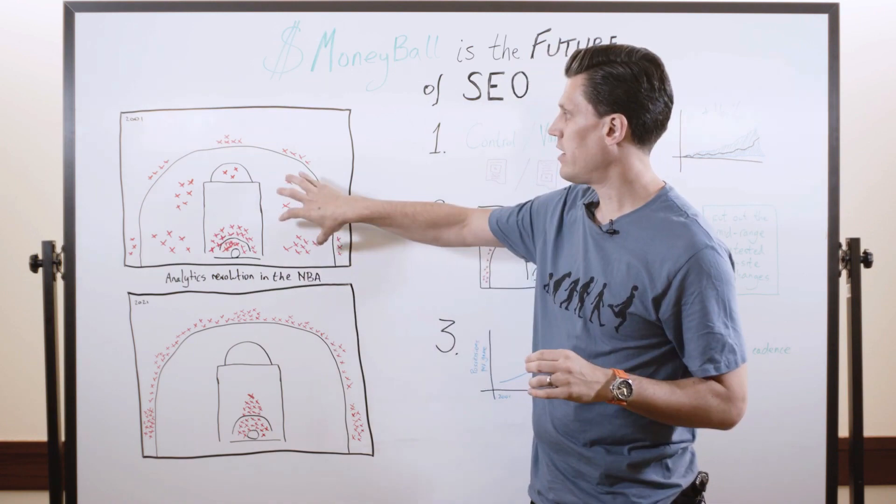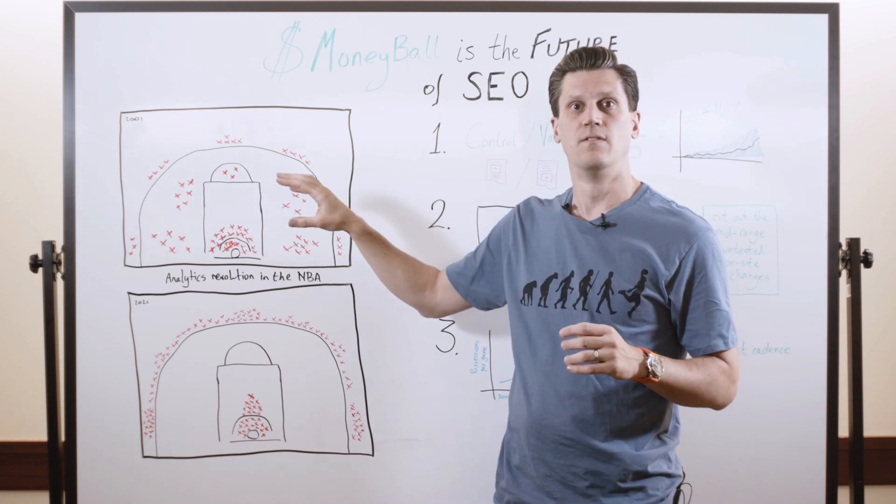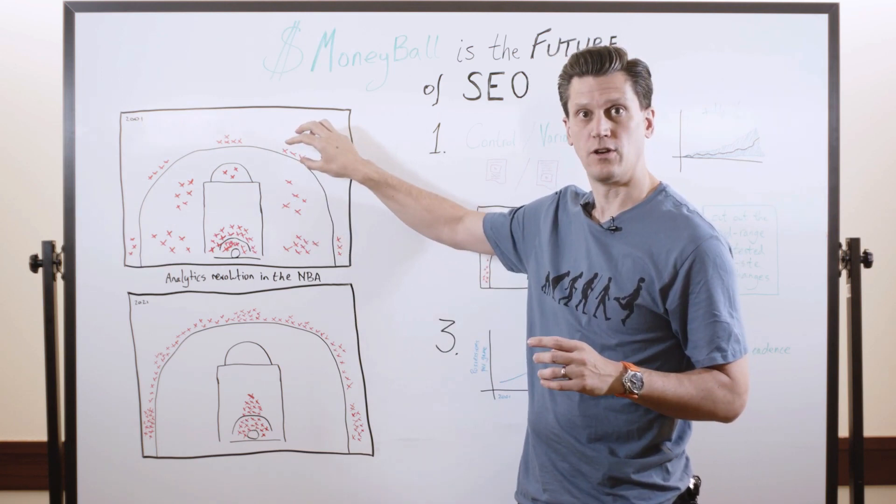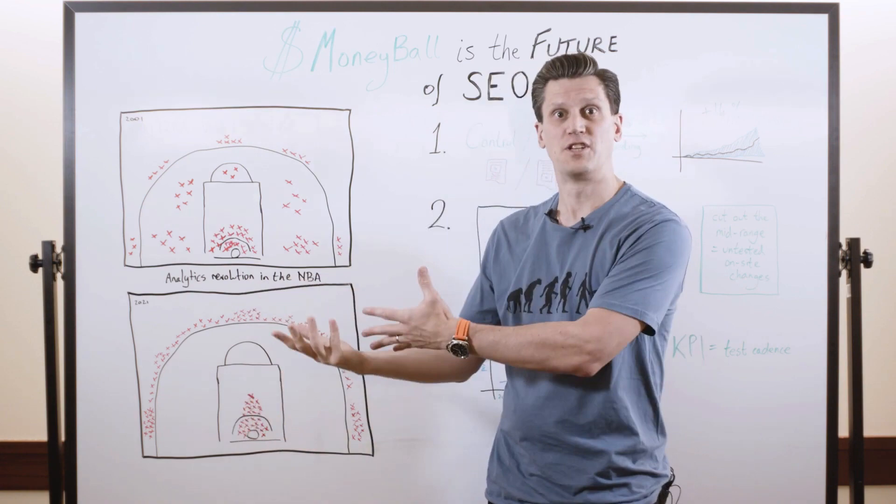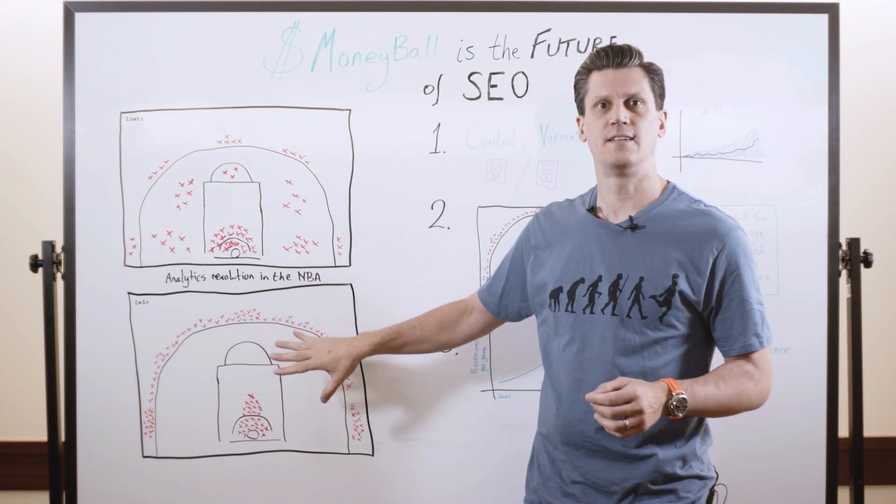And out of that data, they discovered that these mid-range shots that had been part of the game forever were less effective than everyone had assumed. It turned out that they were almost as hard to score as the three-point shots, but of course, worth far less. The dunks and layups, worth only two points, but easy enough to be worth shooting. The three-point shots, worth half as much again, worth shooting, but the mid-range, less so. But it took the advanced statistics to be able to figure that out.